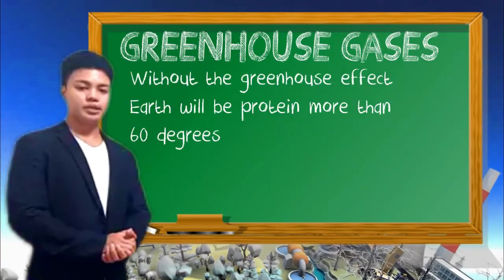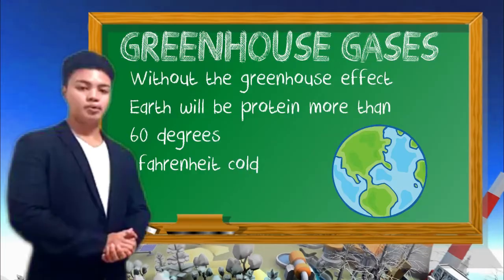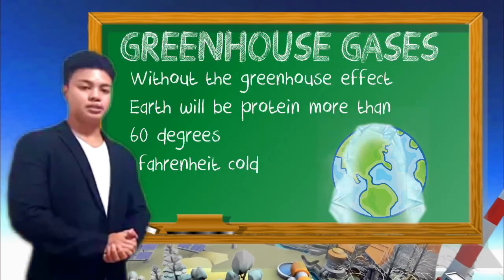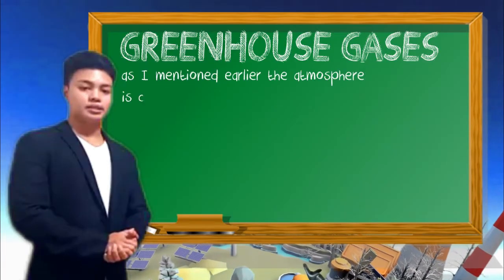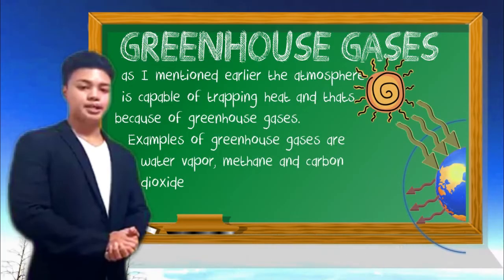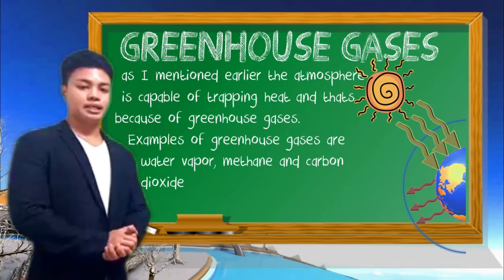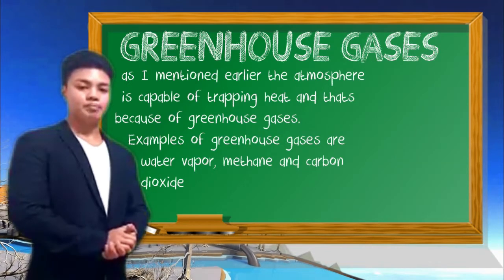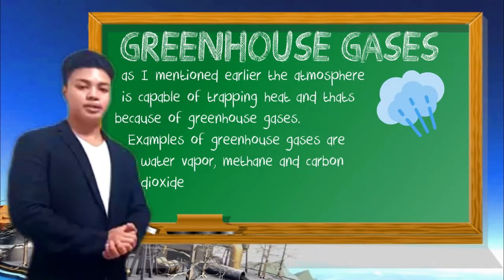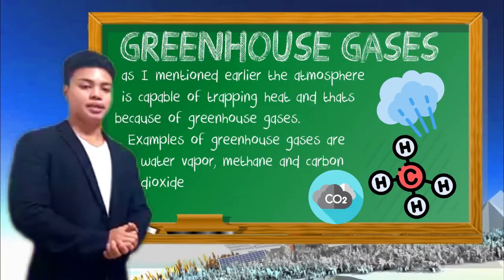Greenhouse Gases. Without the greenhouse gas effect, Earth would be colder by more than 60 degrees Celsius. As I mentioned earlier, the atmosphere is capable of trapping heat and that's because of greenhouse gases. Examples of greenhouse gases are water vapor, methane, and carbon dioxide.